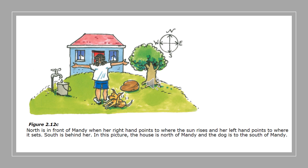Never is for North, East is for East, Silk is for South, and Worms is for West. That will make it easier for you to remember the four main compass points. But there are also points in between north, east, south, and west.